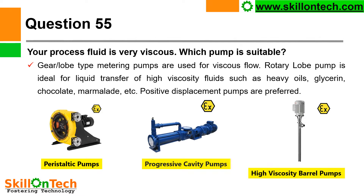Question 55: Your process fluid is very viscous — which pump is suitable? Gear and lobe-type metering pumps are used for viscous flow. Rotary lobe pumps are ideal for liquid transfer of high viscosity fluids such as heavy oils, glycerin, chocolate, marmalade, etc. Positive displacement pumps are preferred. You can see pictures of peristaltic pumps, progressive cavity pumps, and high viscosity barrel pumps.